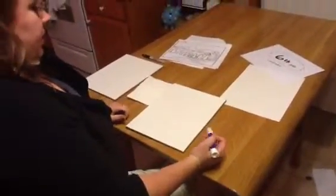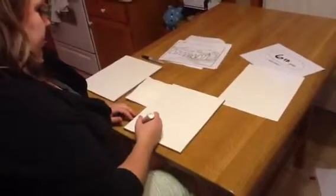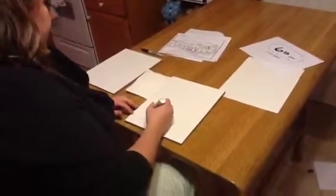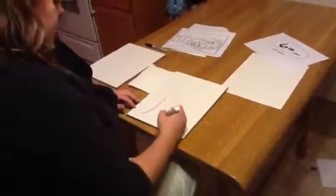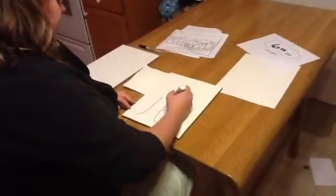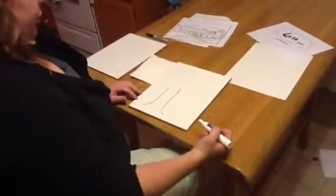On one side of the paper we're going to practice a tree. When we do a tree we're going to start with a trunk and we're going to go up fairly straight but not straight like a ruler.